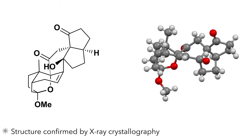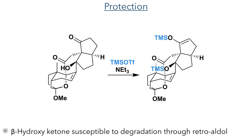The researchers found that this beta-hydroxyketone was susceptible to degradation through a retro-aldol reaction. To avoid this, they reacted the compound with TMS triflate, which protected the hydroxyl group and also formed an acylal enol ether at the cyclopentanone carbonyl group. This silyl enol ether allowed the researchers to perform a Saegusa-Ito oxidation.